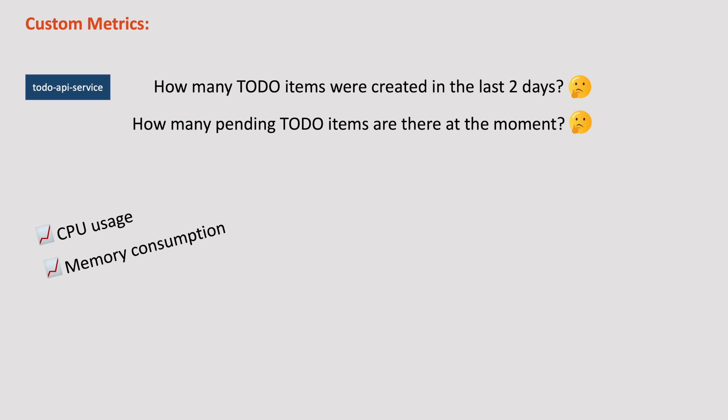CPU usage, memory consumption, number of requests received are common metrics for any application and we get those metrics out of the box by adding some dependencies, like we added the actuator dependency to our to-do application in the previous videos. However, some metrics are specific to the business, like for our to-do application, the number of to-do items created or the number of pending to-do items. As these metrics are specific to an application, these are generally referred to as custom metrics or domain metrics. These metrics greatly help us to understand our application's performance and behavior.